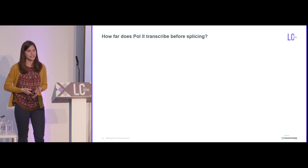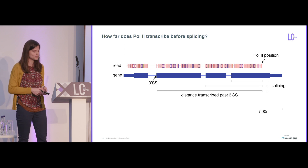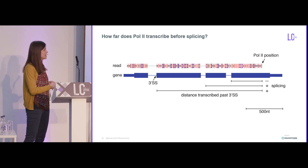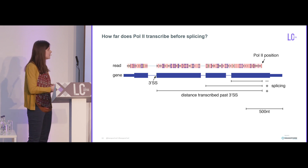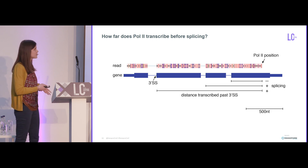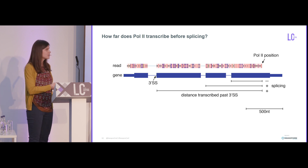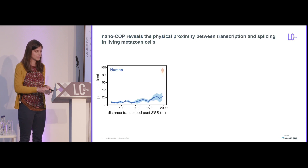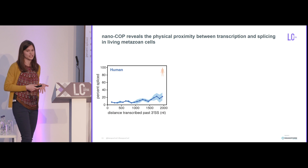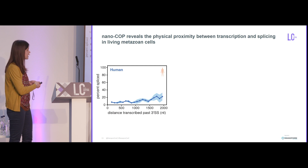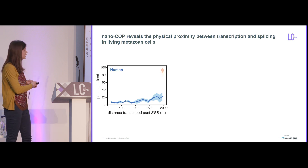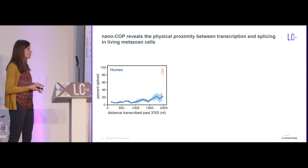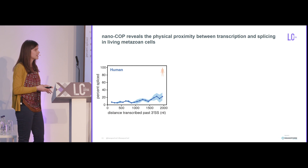The first question I wanted to answer is how far does RNA polymerase 2 transcribe before splicing? Here's a read aligning to a gene with three introns. The key pieces of information are the distance transcribed — the distance between the three-prime end of the intron and the three-prime end of the nascent RNA — and whether splicing has occurred. Looking globally at human K562 cells, the x-axis shows the distance transcribed before splicing in 100-nucleotide bins, and within each bin I calculated the percent of molecules that are spliced. In human cells, very little splicing is actually happening when RNA Pol II is within two kilobases from the intron, really suggesting that transcription and splicing are not in close physical proximity.